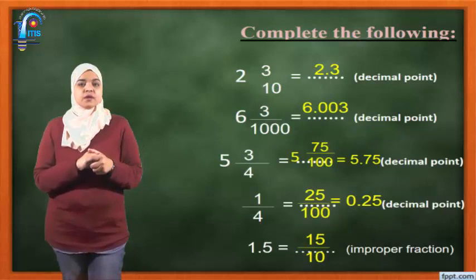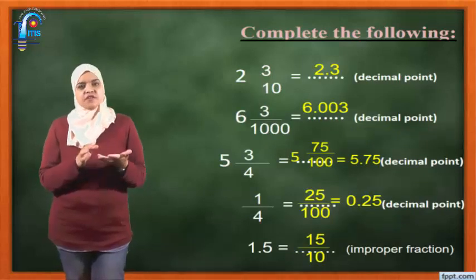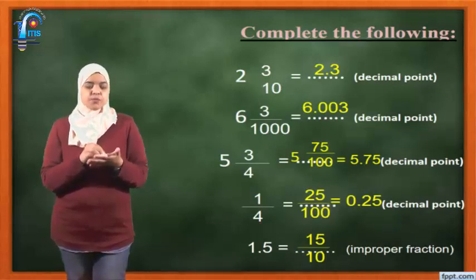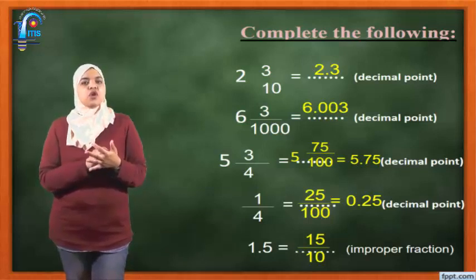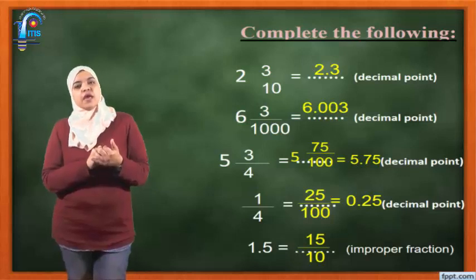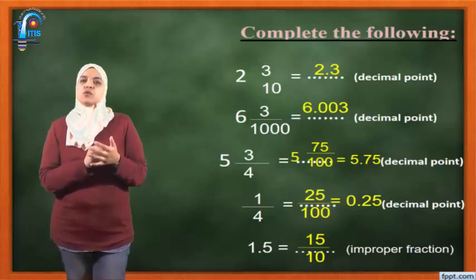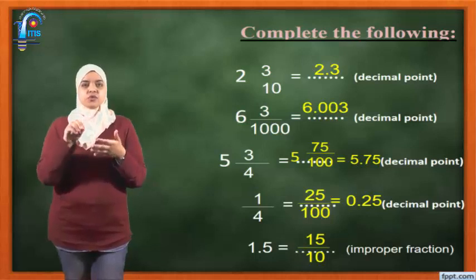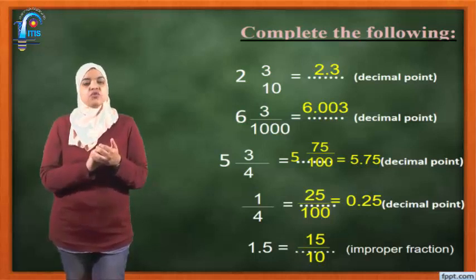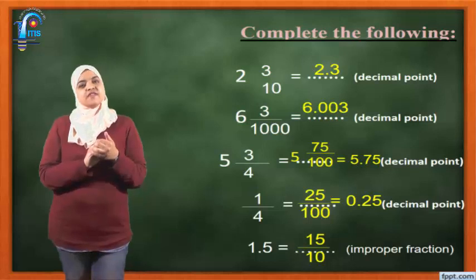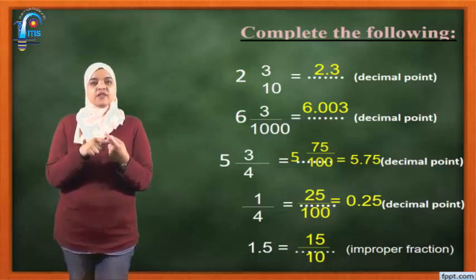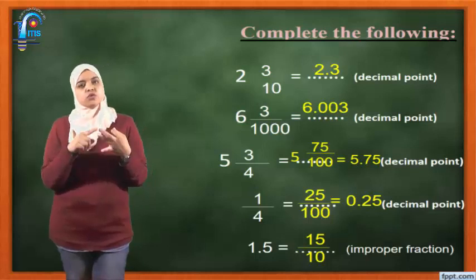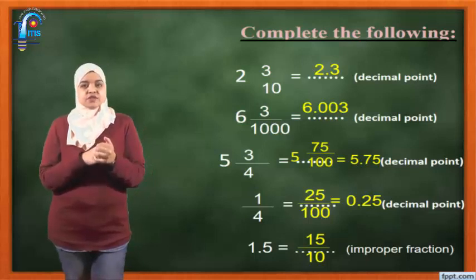Complete the following — the decimal point. What is the meaning of a decimal number? Any number with a point between the digits. This is called a decimal point. For example, 2 and 3 over 10 — I want to write this as a decimal. 2 is a whole number, so I write 2. For 3 over 10, the denominator is 10. To write a fraction as a decimal, the denominator must be 10, 100, or 1000. Here the denominator is 10.